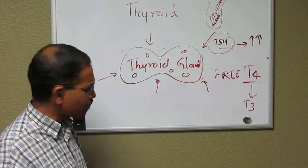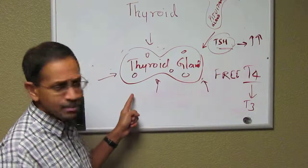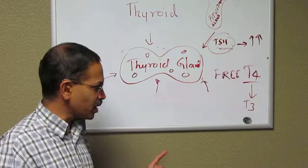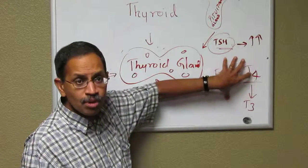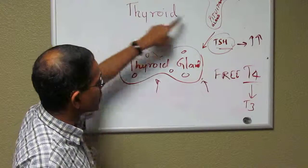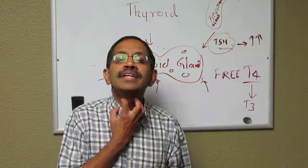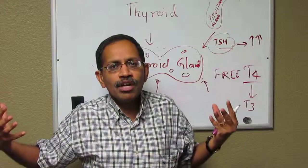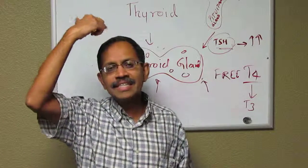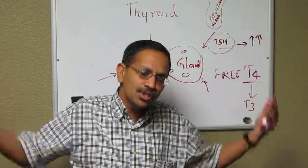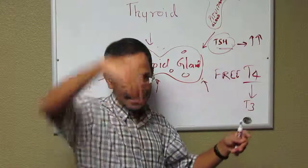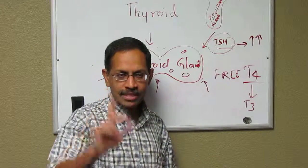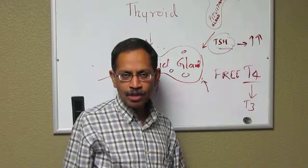In hyperthyroidism, the gland gets attacked by the antibodies, and the antibodies then cause too much free T4 and T3 to be produced. Because this hormone is high, it suppresses the TSH. The gland is controlled by the brain, so if the gland is producing a lot of hormones, you don't need signals coming from the brain. So the TSH will be low, and the free T4 will be high — that will be the picture you see in hyperthyroidism.